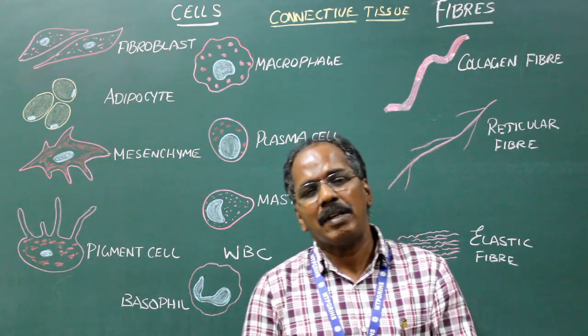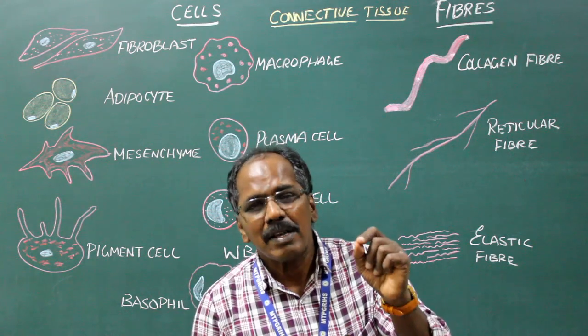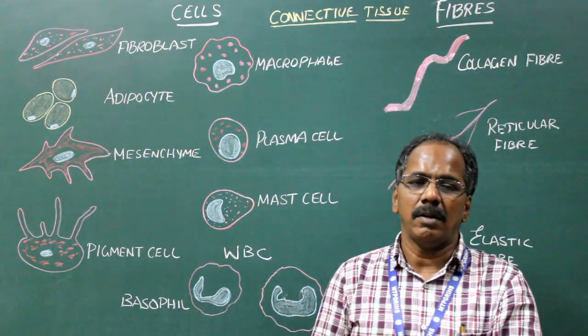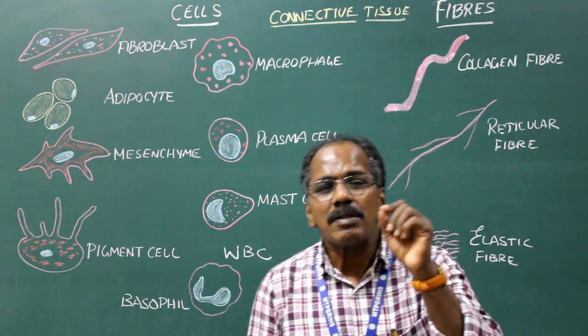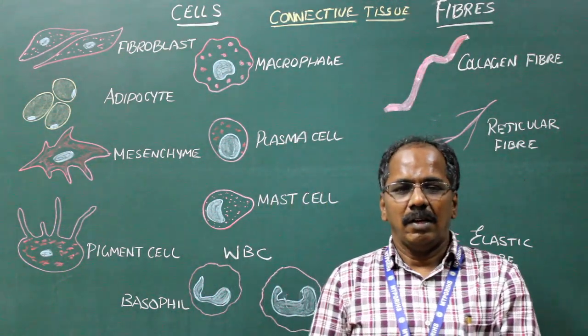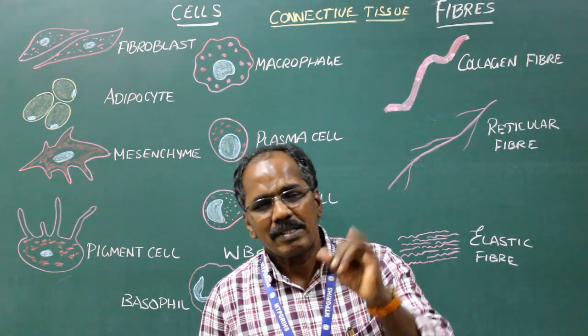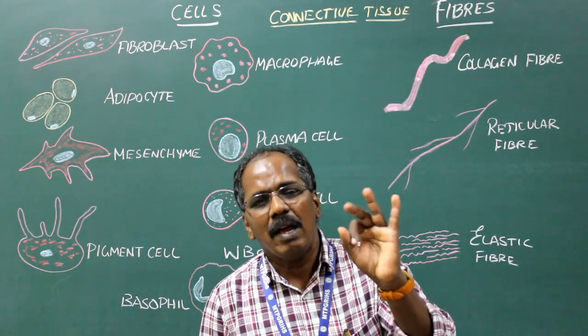General features: It is derived from mesoderm. It is highly vascular except for cartilage and dermis. It has nerve supply except for cartilage. It consists of three basic elements: cells, fibers and ground substance.